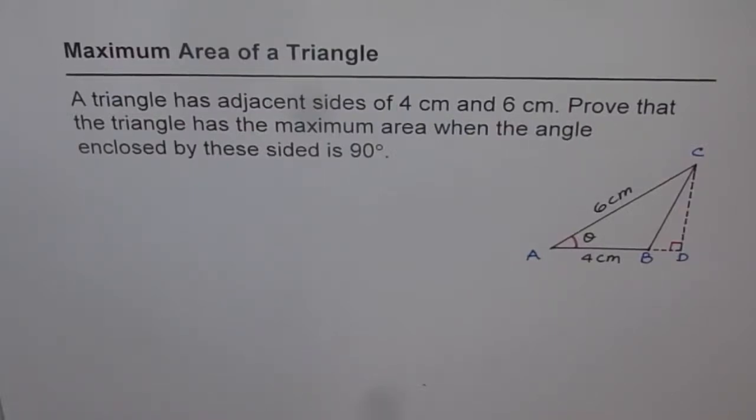Maximum area of a triangle. A triangle has adjacent sides of 4 cm and 6 cm. Prove that the triangle has the maximum area when the angle enclosed by these sides is 90 degrees.